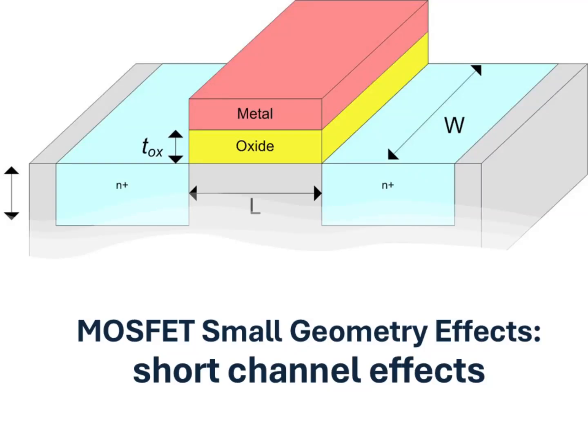From our scaling discussion, it is clear that shrinking MOSFET dimensions improve speed and density, but it also introduces new physical challenges. When the channel length becomes comparable to the depletion regions, the gate loses full control over the channel, leading to short channel effects.